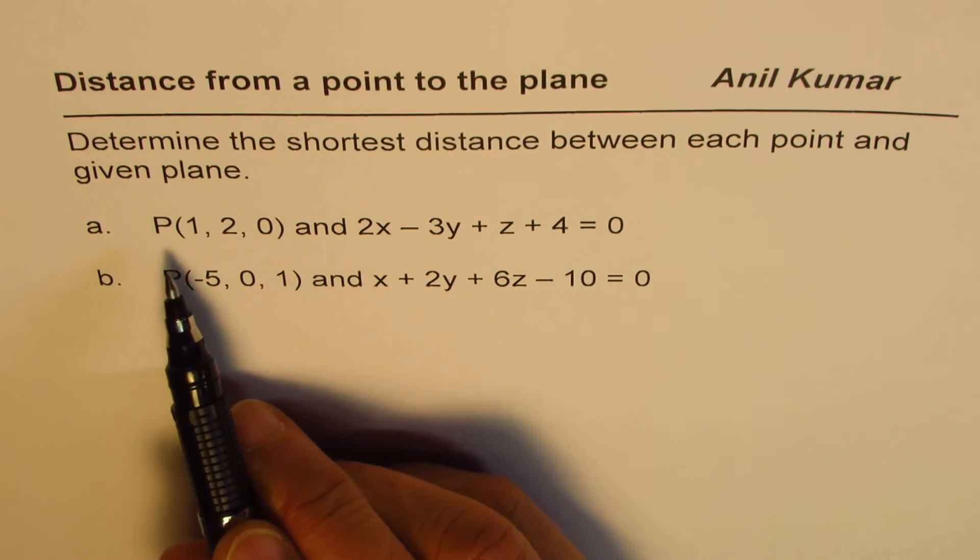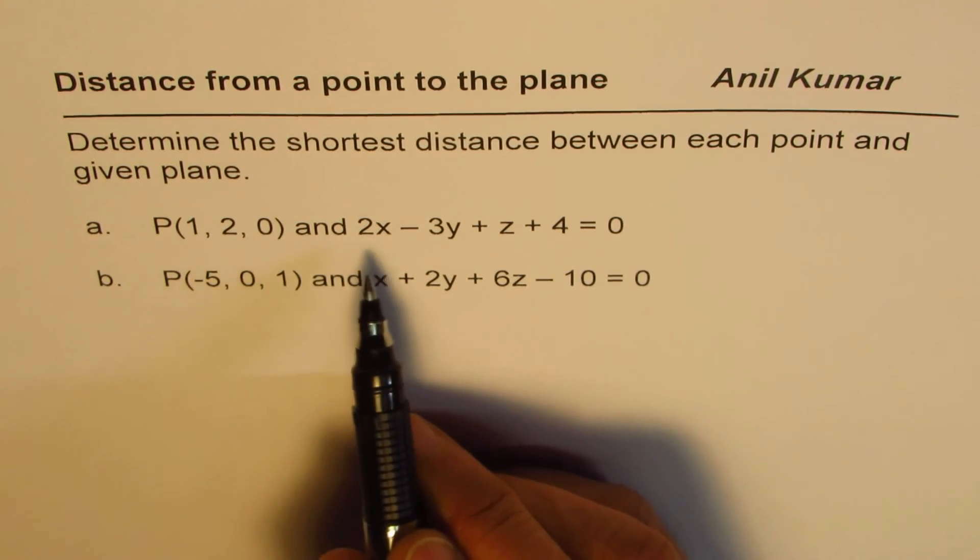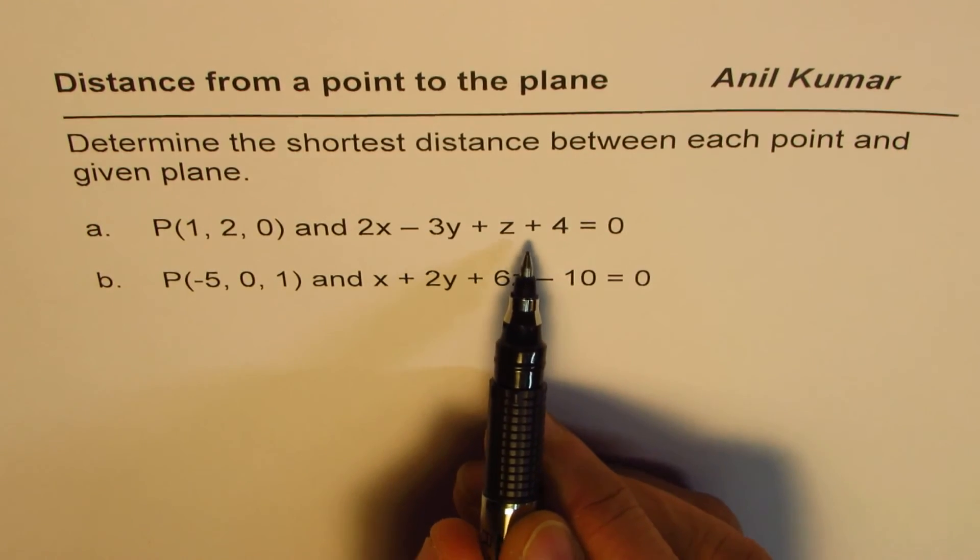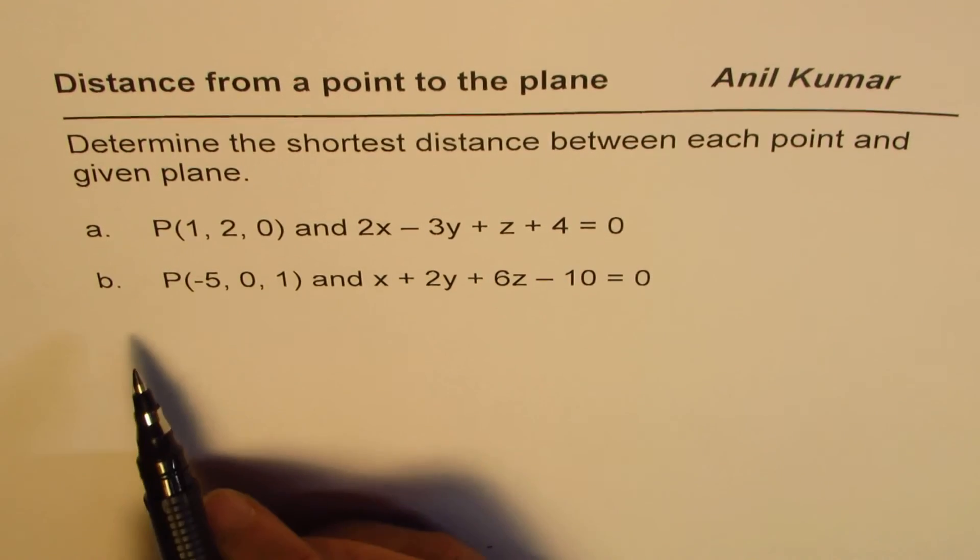Part A, we have a point 1, 2, 0 and the equation of plane is 2x minus 3y plus z plus 4 equals to 0.